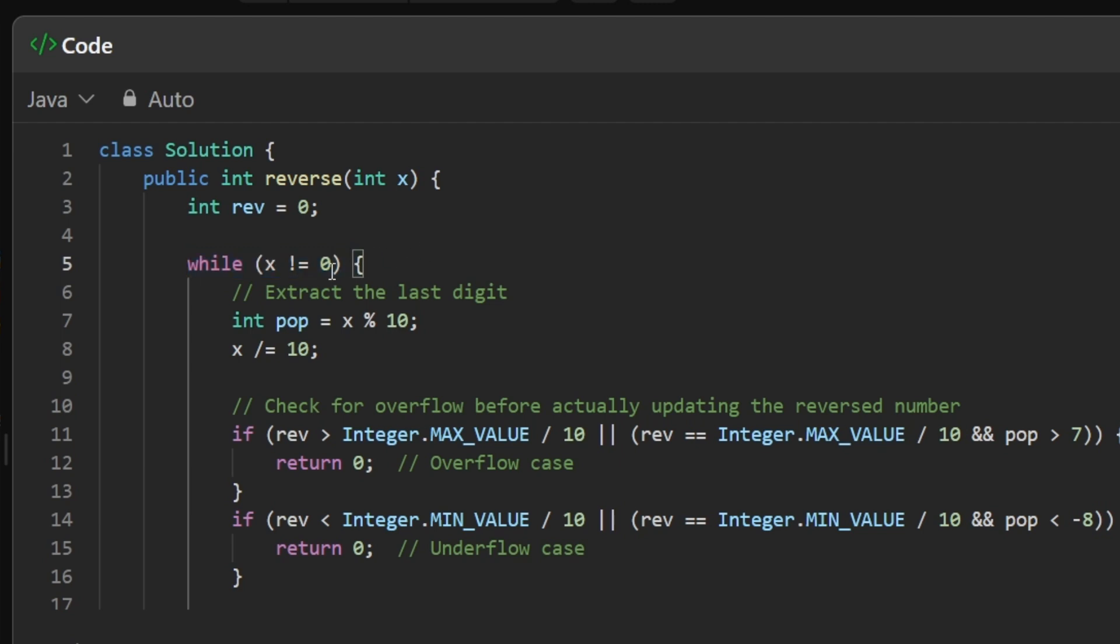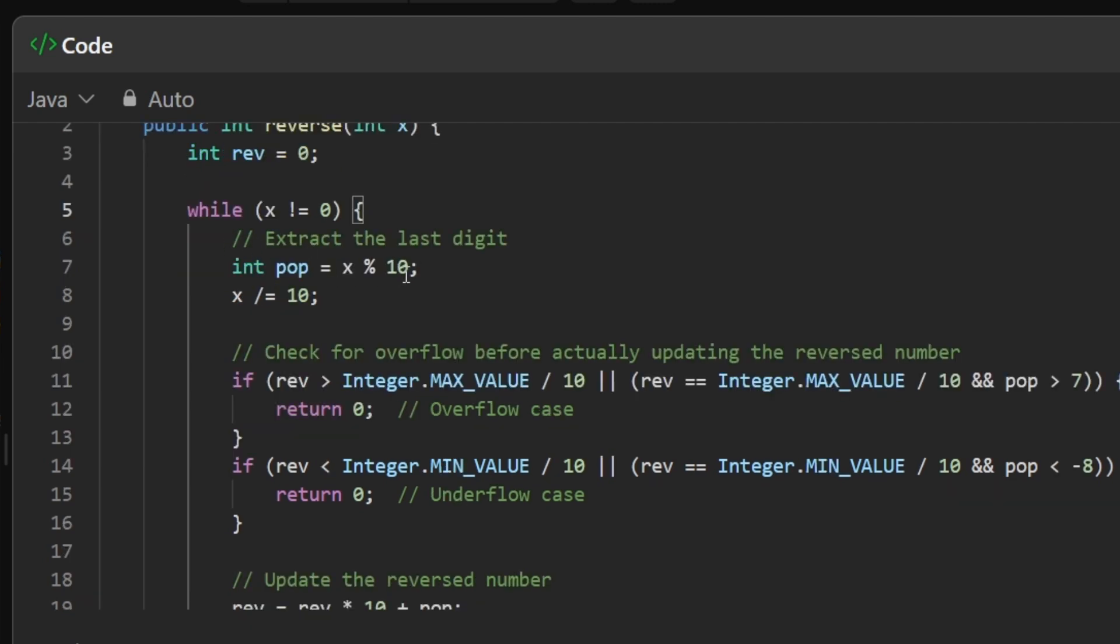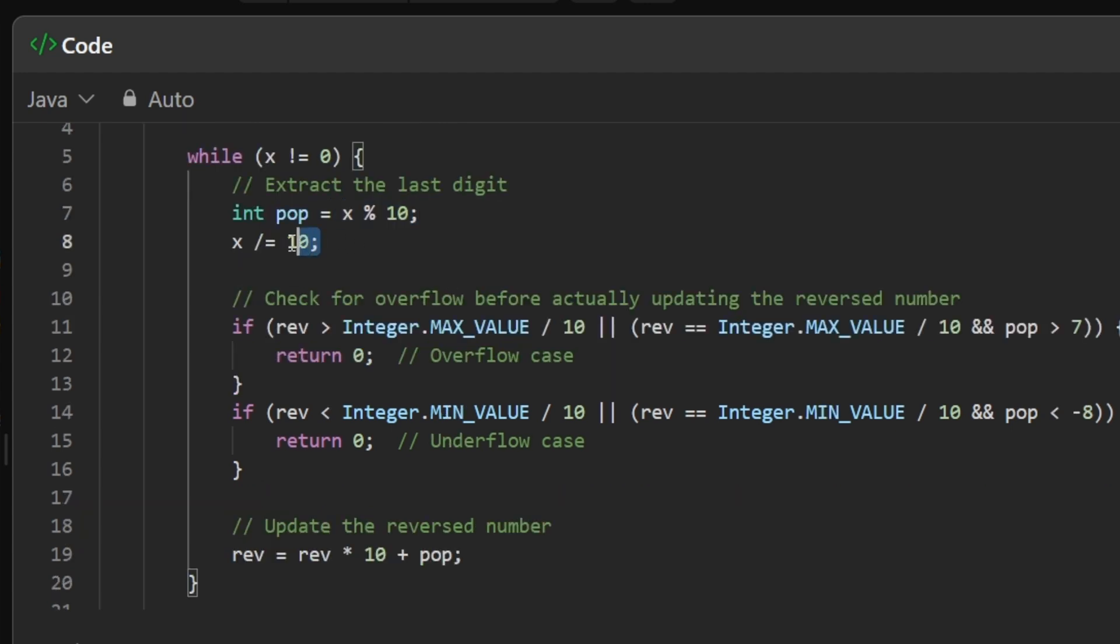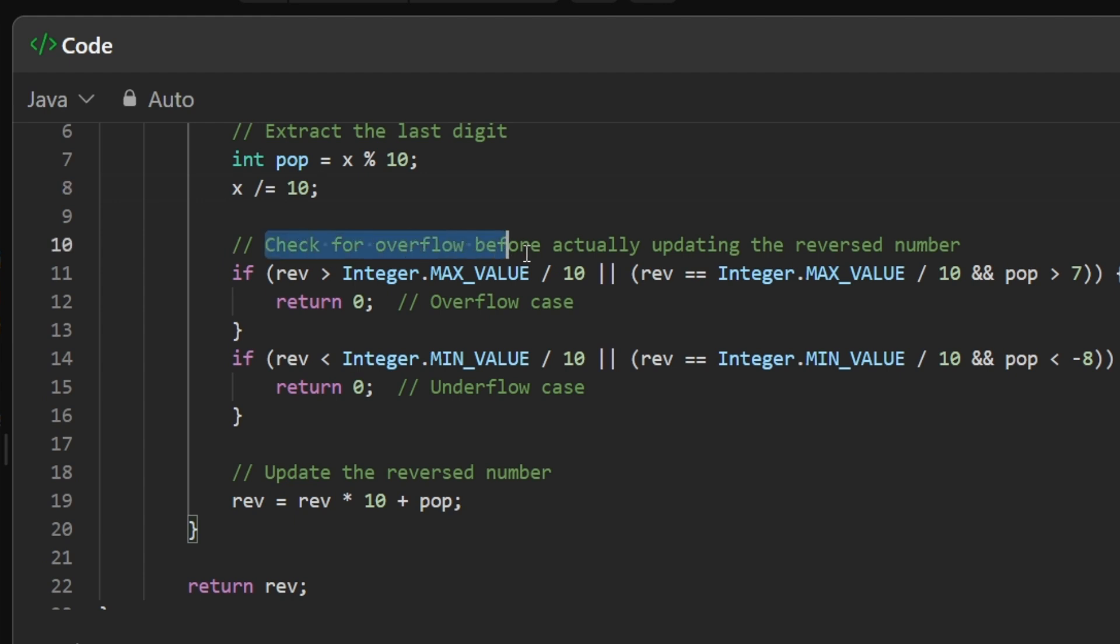Then we are going to run our loop that while the given x is not equal to 0, we will first extract the last digit and that is by doing the modulo operation. Then we would simply divide the current number of x by 10, and because it's an integer, we would just remove the very last character.